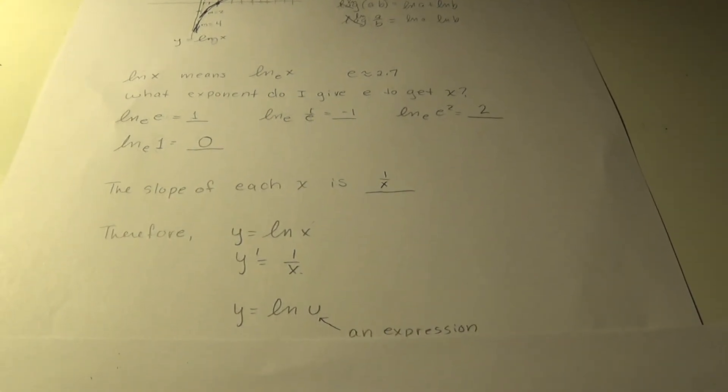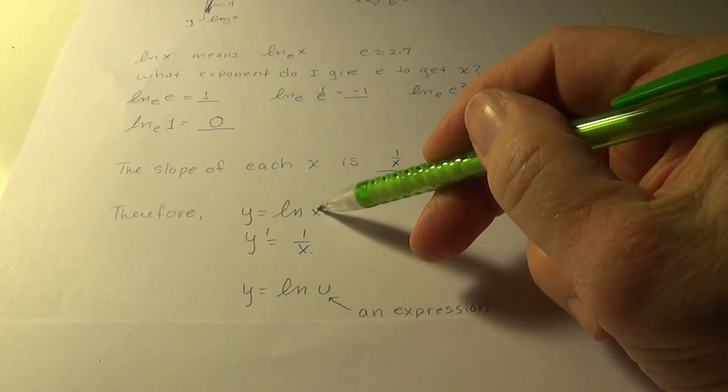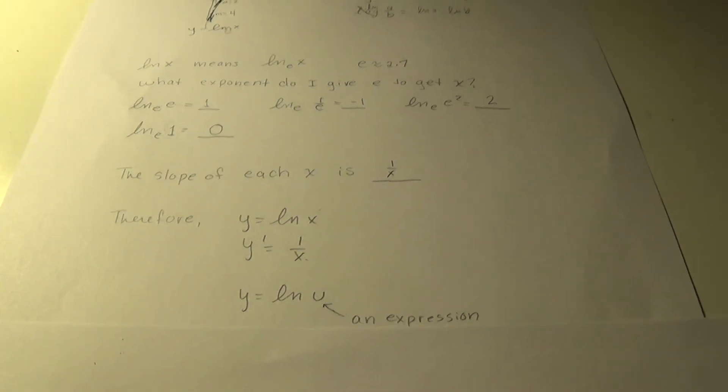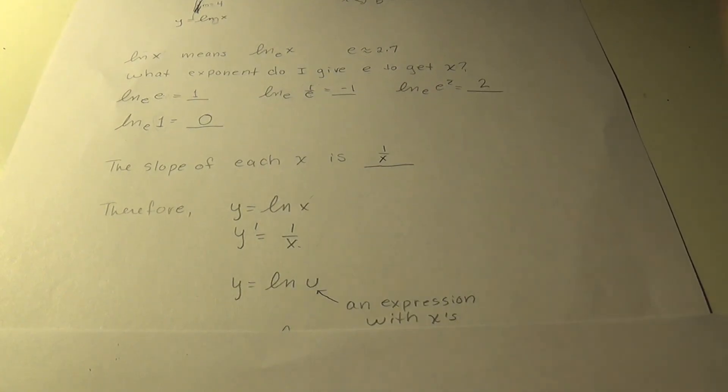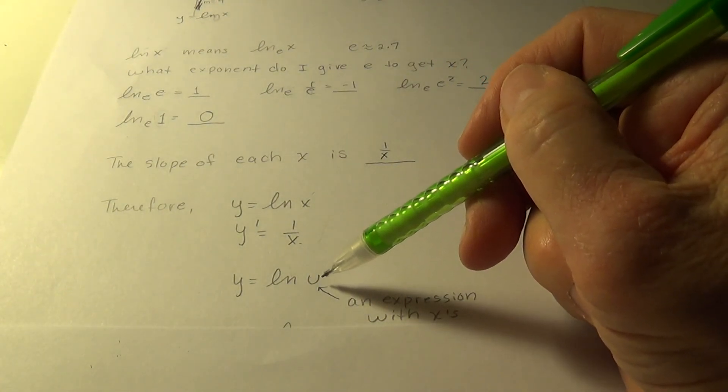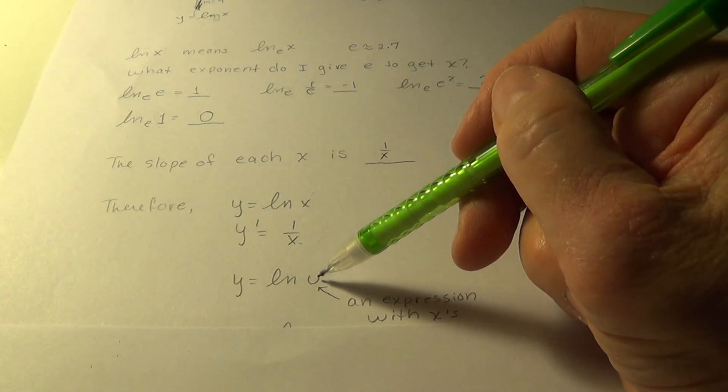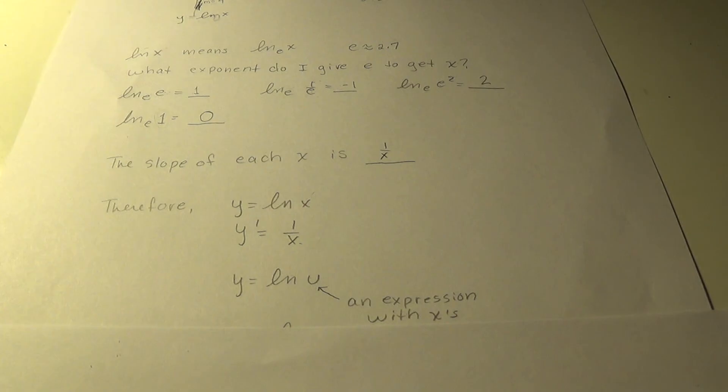A more useful form of that is changing x to a u. And that holds a lot more meaning, because u is not just an x. It's an expression made up of x's. So it could be anything. It could be ln of x squared minus 2x plus 4, or it could be sine of x. Any expression with x in it. And at once, it'll be used simultaneously.